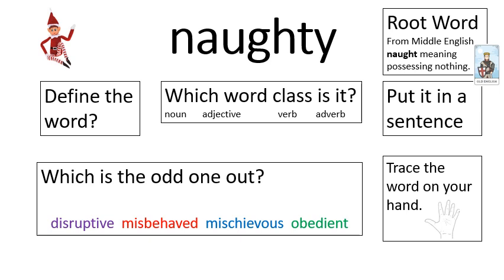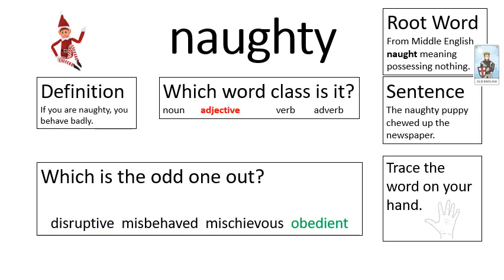The word we're learning this week is 'naughty' — quite a common word but quite tricky to spell because of that A-U-G-H-T section in the middle. The root word is 'nought', a Middle English word meaning possessing nothing. If you are naughty, you behave badly — it's an adjective, describing something or someone as being naughty. My sentence: 'The naughty puppy chewed up the newspaper.' Disruptive, misbehaved, and mischievous are all synonyms for naughty, and 'obedient' is an antonym — if you're obedient, you follow the rules. Hopefully you've traced the word on your hand.